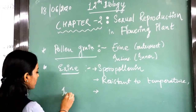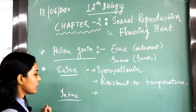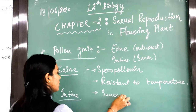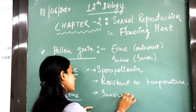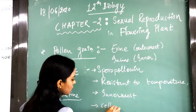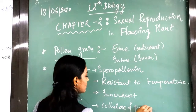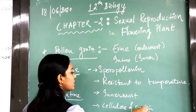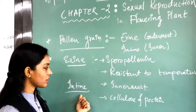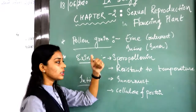Now we will see entine, that is the innermost layer. It is said that this innermost layer is made up of cellulose and pectin. These two components form the innermost layer which helps in nourishment of the pollen grain.